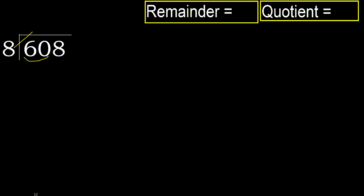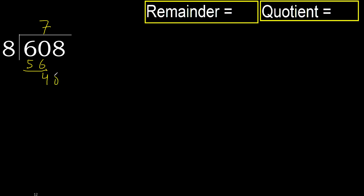8 multiplied by 8 is 64. 64 is greater. Multiply by 7. 56 is not greater, okay. Subtract. 60 minus 56 is 4, next.